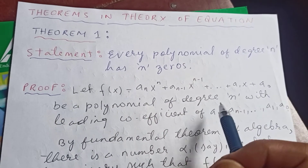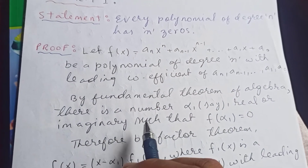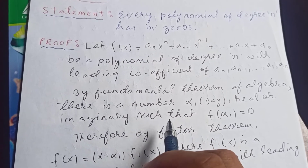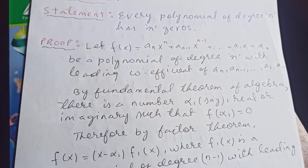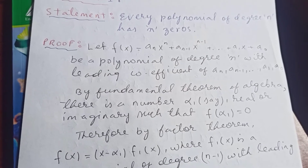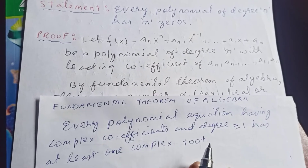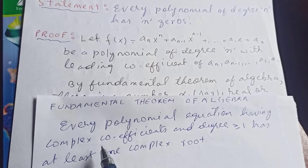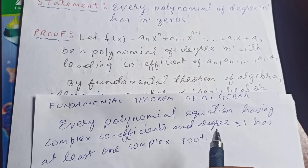Now, by the Fundamental Theorem of Algebra, there is a number α₁ — real or imaginary — such that f(α₁) = 0. I'm not going to prove the Fundamental Theorem of Algebra here, but let's state it: every polynomial equation having complex coefficients and degree greater than or equal to 1 has at least one complex root.